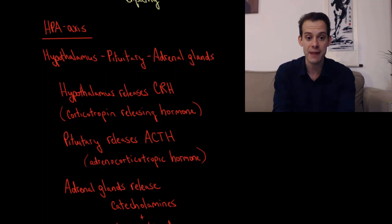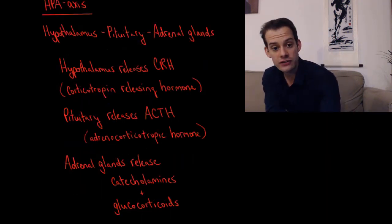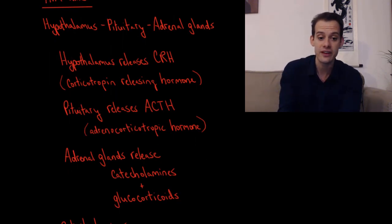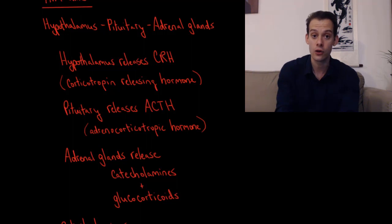So the HPA axis begins with the hypothalamus releasing a hormone called CRH in response to a threat. And this is corticotropin-releasing hormone. And this tells the pituitary gland to release its hormone, which is ACTH, or adrenocorticotropic hormone. And so when the pituitary releases this adrenocorticotropic hormone, this travels in the bloodstream and reaches the adrenal glands, which are located just on top of the kidneys. And when the adrenal glands receive this signal from the ACTH, they release two groups of hormones, catecholamines and glucocorticoids.